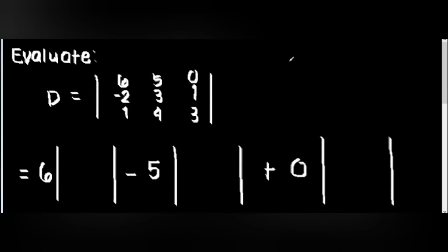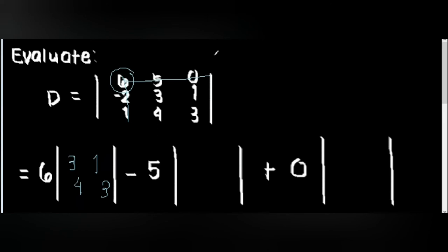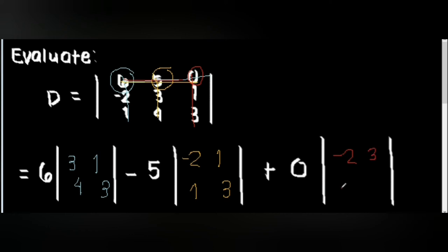Going back to the example, applying the formula: the first number is 6 (first row, first column). Covering the rows and columns it occupies, we are left with 3, 1, 4, and 3. Minus the number in the first row, second column — which is 5 — and covering its rows and columns, we are left with negative 2, 1, 1, 3. Plus the number in the first row, third column, which is 0, and covering its rows and columns, we have negative 2, 3, 1, and 4.